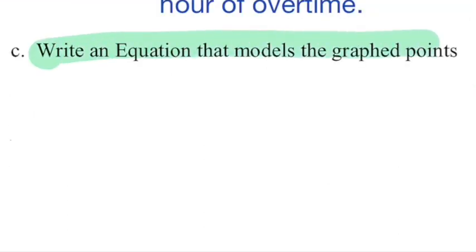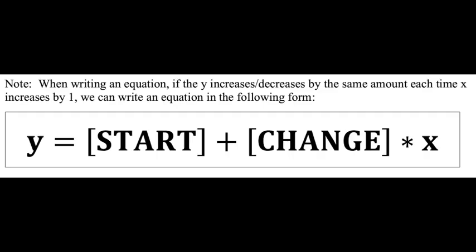Next, we're being asked to write an equation that models the graph points. Since lines have what we call a consistent rate of change, there's only two things you need to know about a line, where it starts and how it changes. If you know those two pieces of information, you can plug it into this form, Y equals start plus change X.